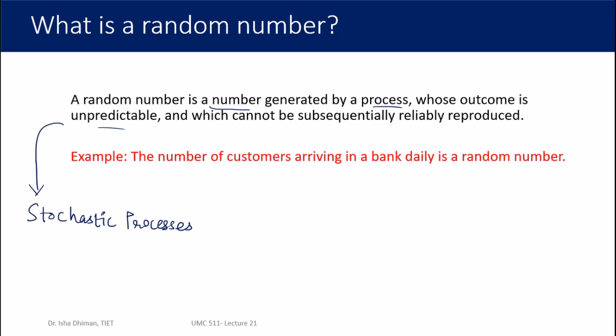For example, the number of customers arriving in a bank daily is a random number. You go to the bank from 3 to 4 PM and count customers within that one hour. If you do this for 10 or 15 consecutive days, you'll get 10 or 15 different random numbers — not necessarily all different values, but they are random because nobody is controlling how many customers will come; it's not coming out of a formula.